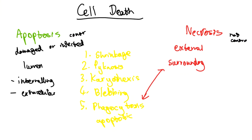To compare apoptosis versus necrosis: apoptosis is regulated, necrosis is unregulated. With apoptosis, surrounding cells are unaffected; with necrosis, surrounding cells are affected. Apoptosis can sometimes be beneficial, whereas necrosis is not really beneficial. Cells in apoptosis can be removed by phagocytosis, while necrotic cells have to be removed surgically. Necrosis is relatively simple — the cell swells up and bursts — whereas apoptosis involves many processes: cell shrinkage, pyknosis, karyorrhexis, blebbing, and last but not least phagocytosis.